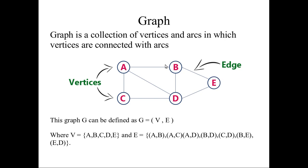So how will you represent this graph into mathematical form? This graph G has been represented as G equals, within the parenthesis, V comma E. So V is called vertices and E is called edges.